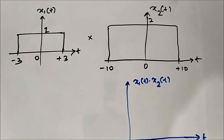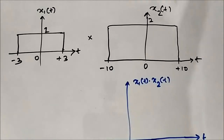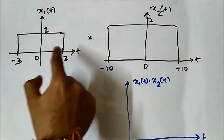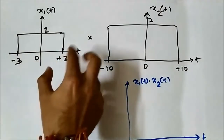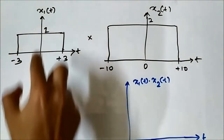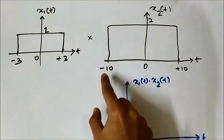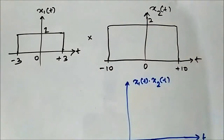As per the definition we have to multiply their amplitude values at respective instances. This first signal exists from minus 3 to plus 3 and has an amplitude value of 1. The second signal exists from minus 10 to plus 10 and has an amplitude value of 2.